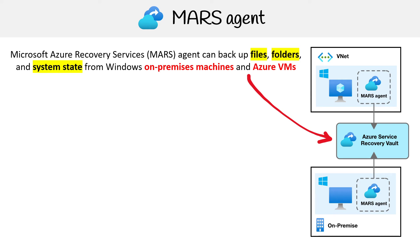To give you a little visual: imagine you have your own on-premise machine with the MARS agent installed, and you also have your own VM running in your own VNet with the MARS agent installed — it's going to back that stuff up to the Azure Service Recovery Vault.